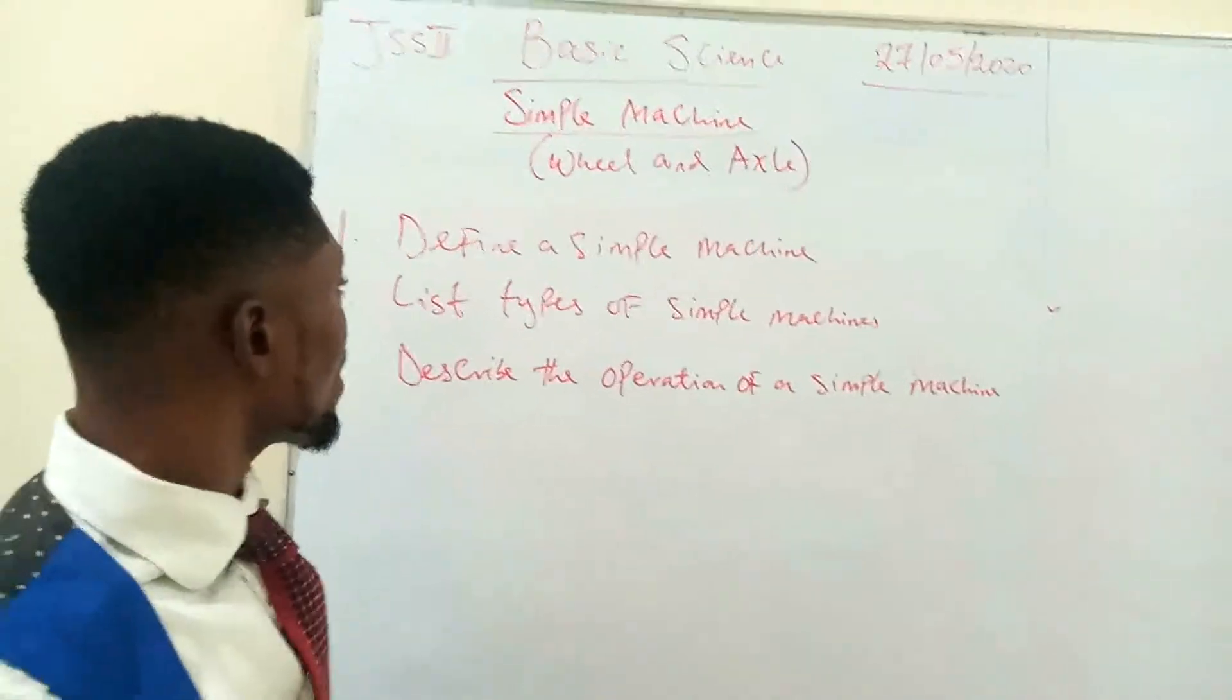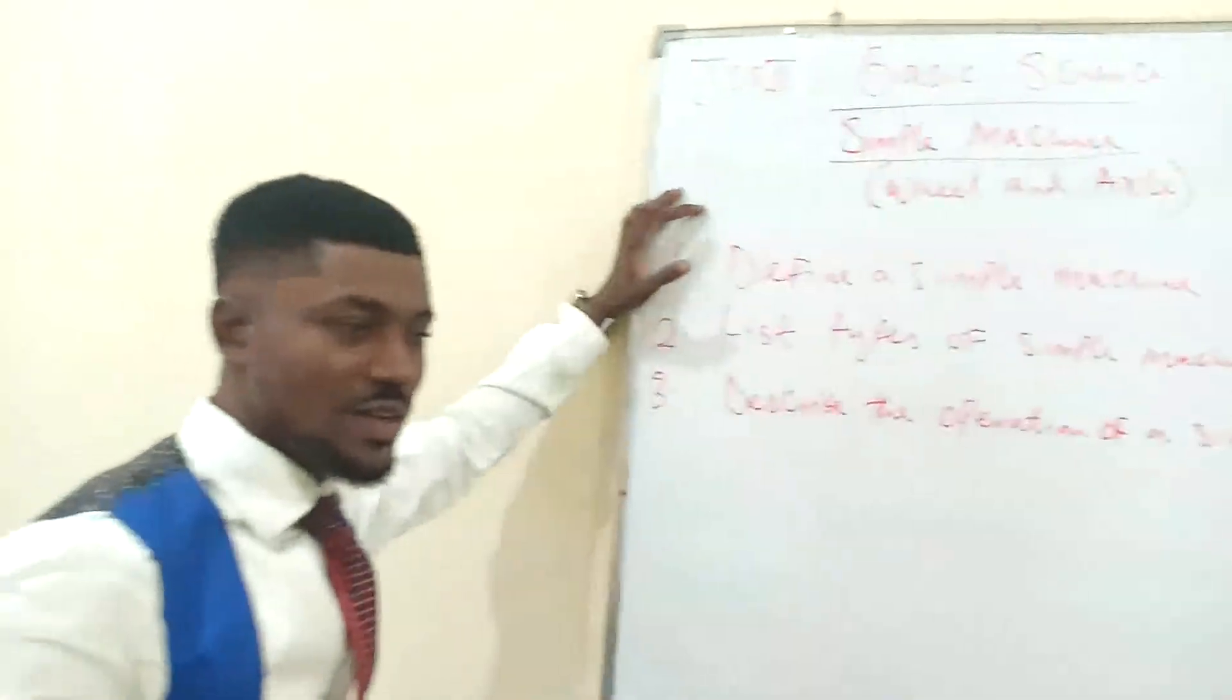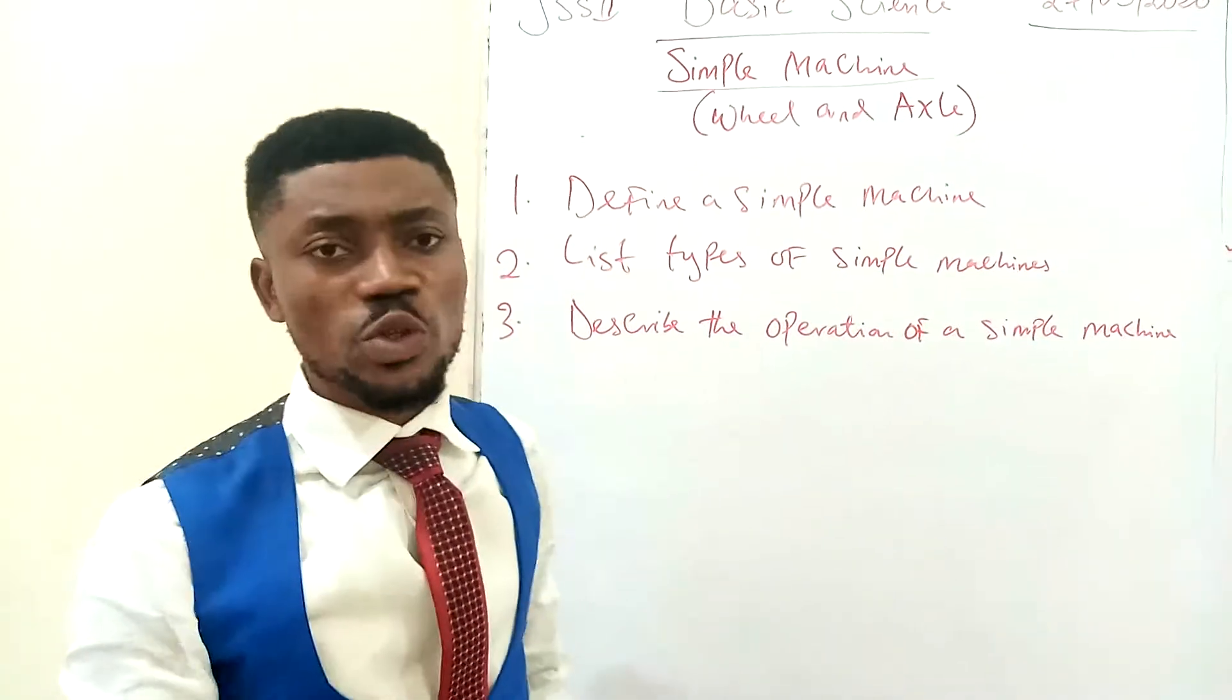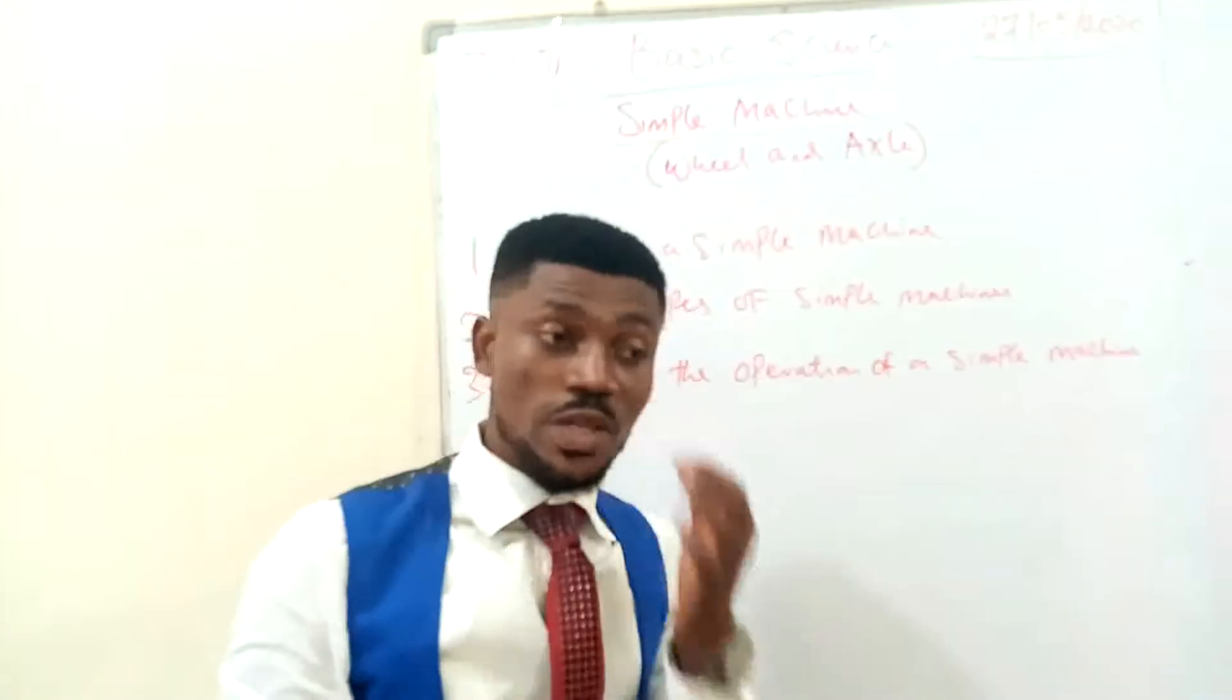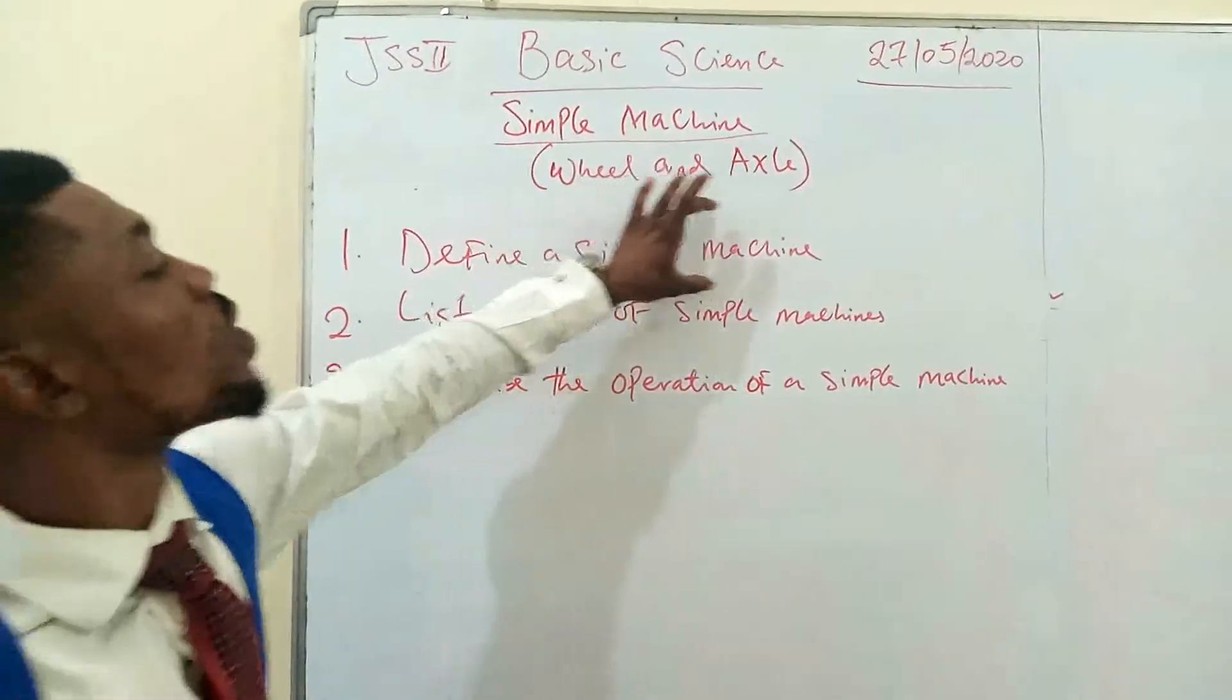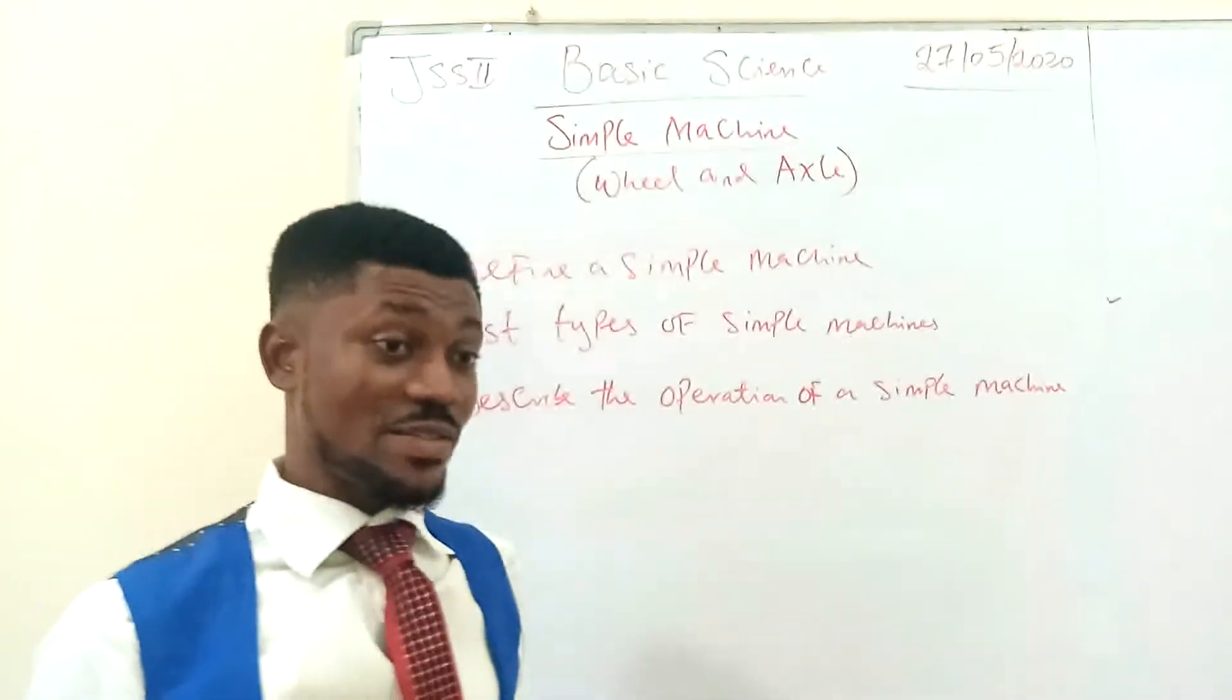Okay, now let's go to the first objective. What is a simple machine? Most times we tend to be confused when we have some prefix. One would wonder, what is a simple machine? Simple machine is a simple machine. Just remember this word, simple. What is a machine? People will say a machine is anything that can help you to do your work. Yes, that's correct.